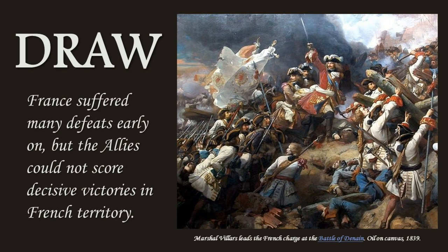In spite of some early defeats, Louis was able to save France and bring his enemies to the negotiating table for a fair settlement at Utrecht in the Dutch Republic. In 1714, the Treaty of Utrecht not only ended the War of the Spanish Succession, but it was the end of all of Louis XIV's wars. There are three things you really need to know about this treaty.